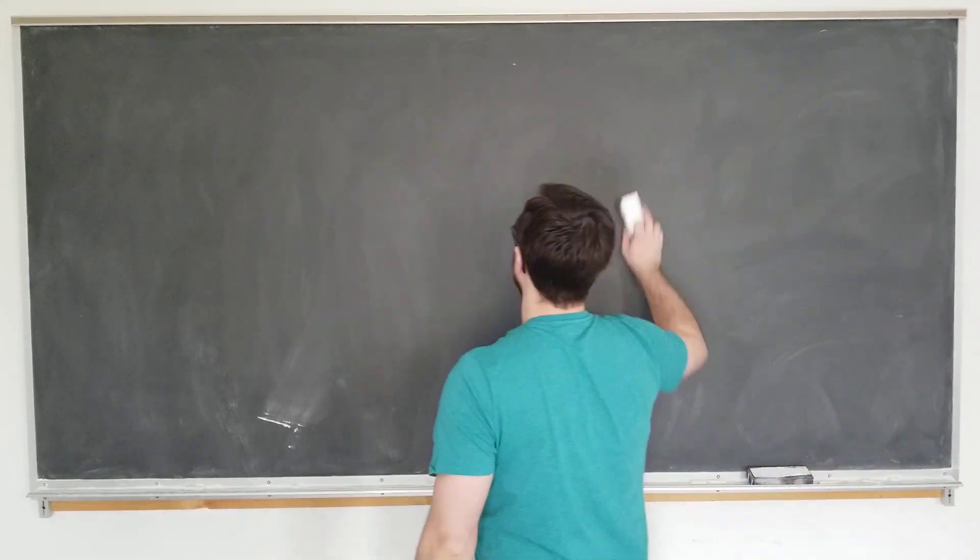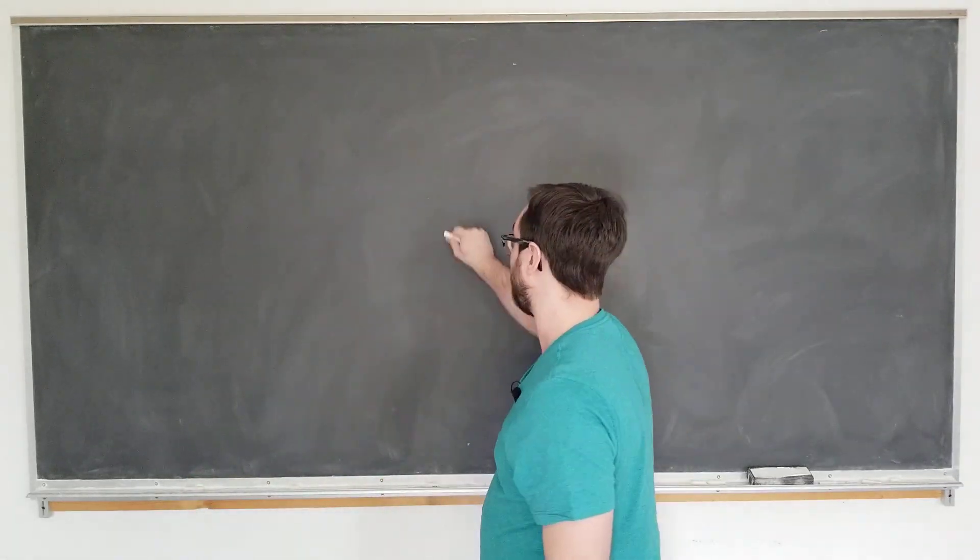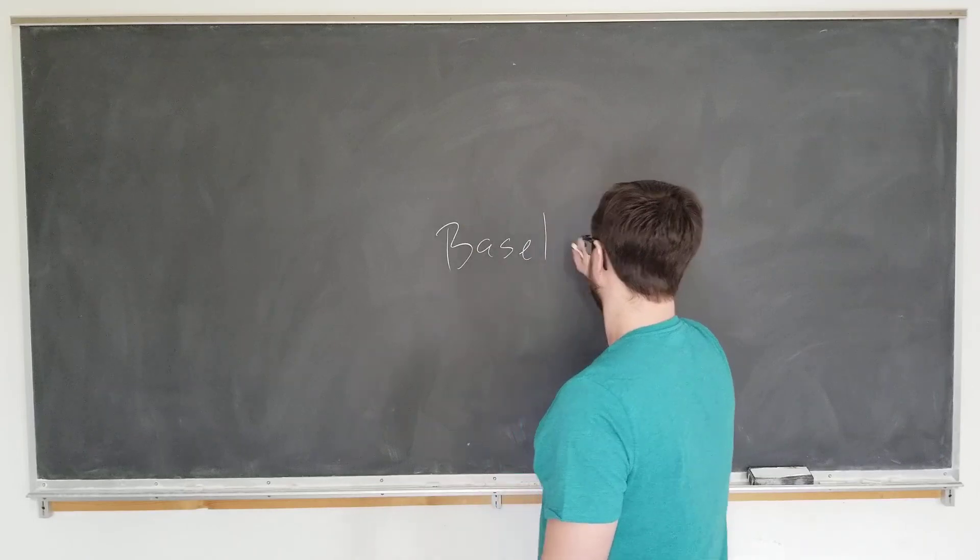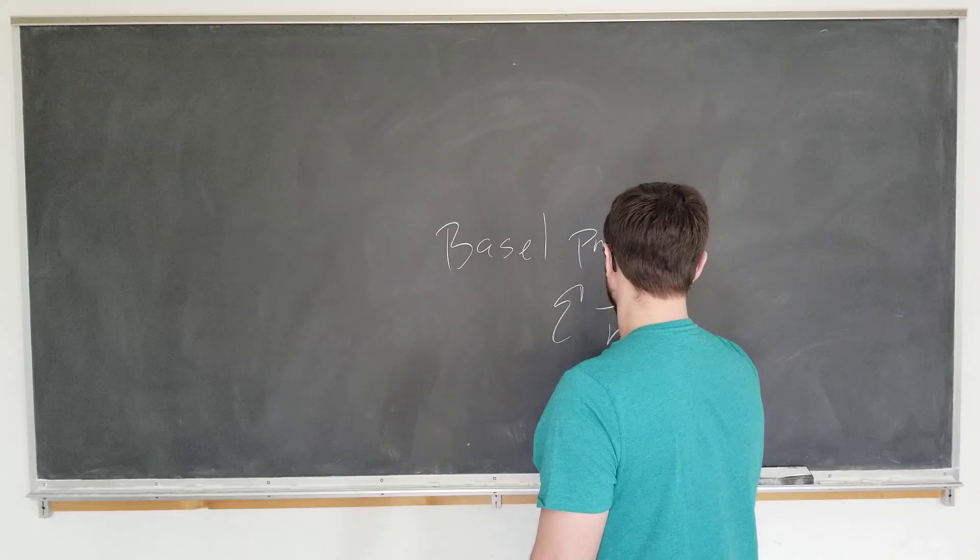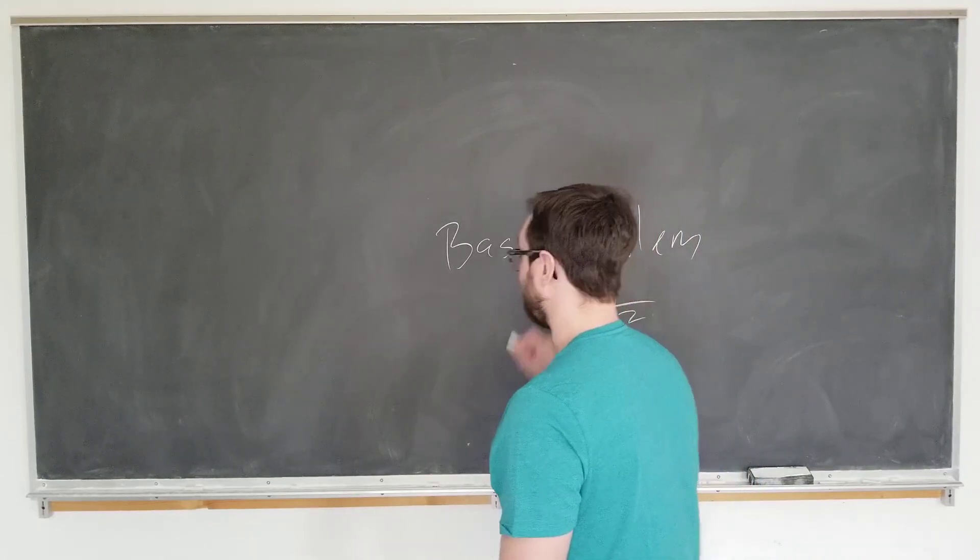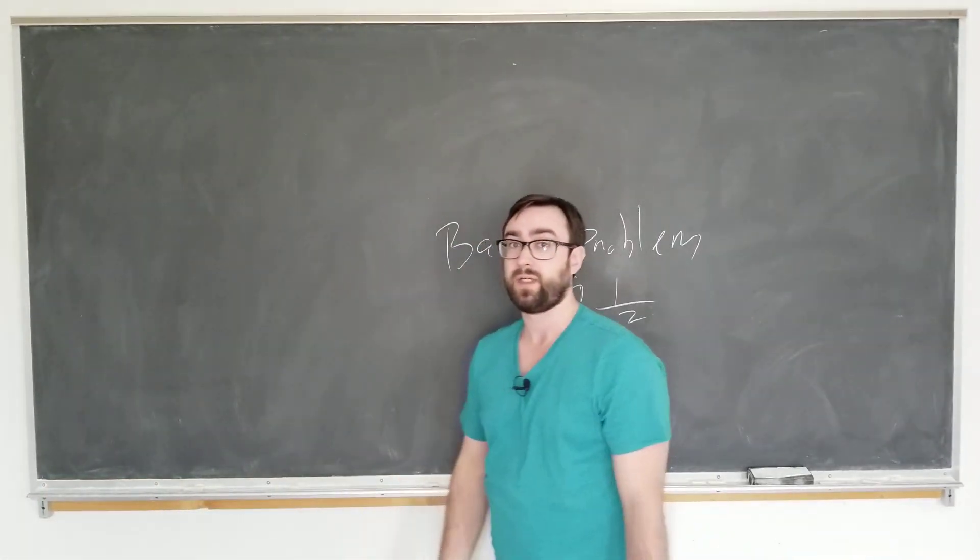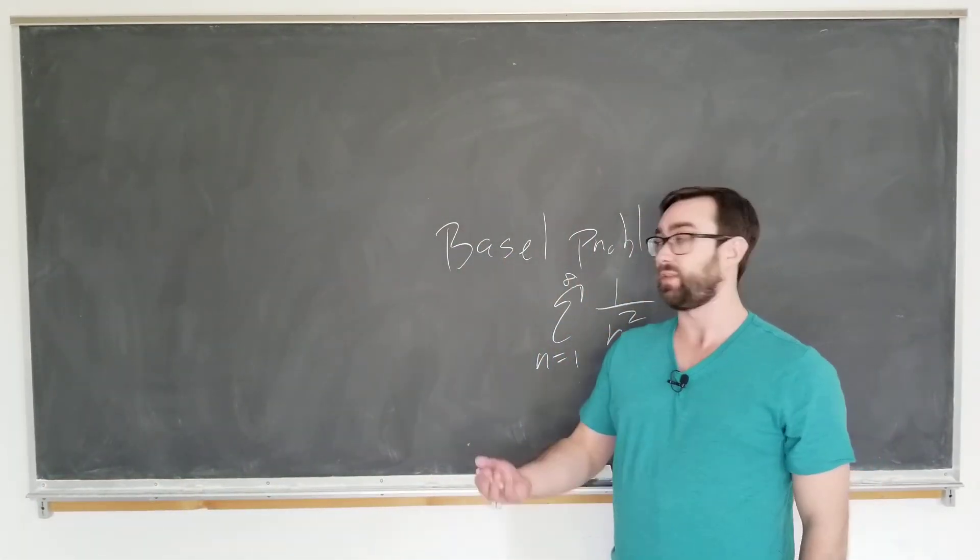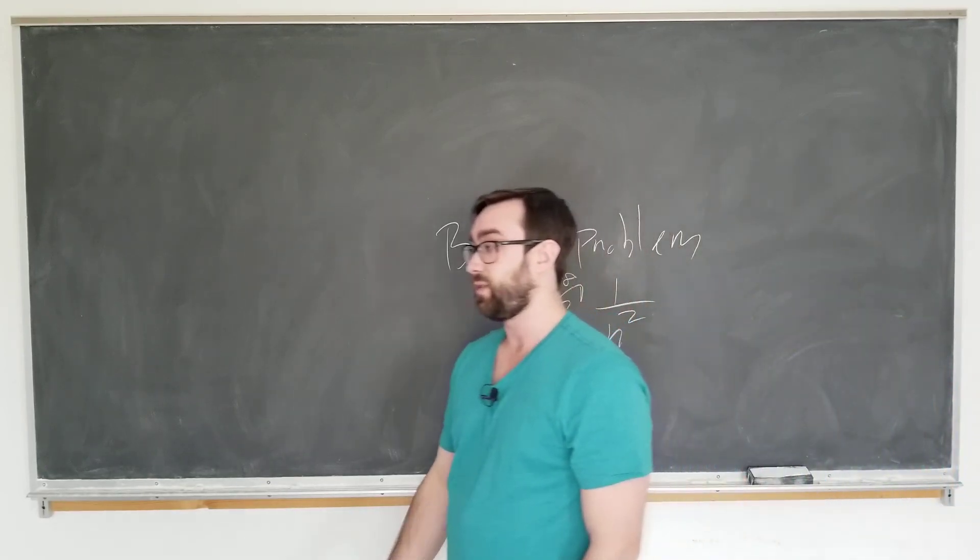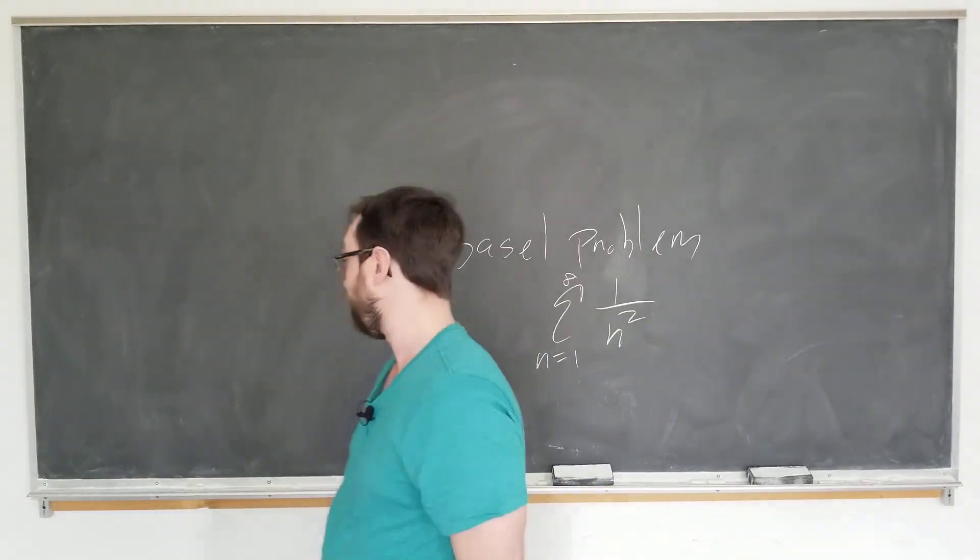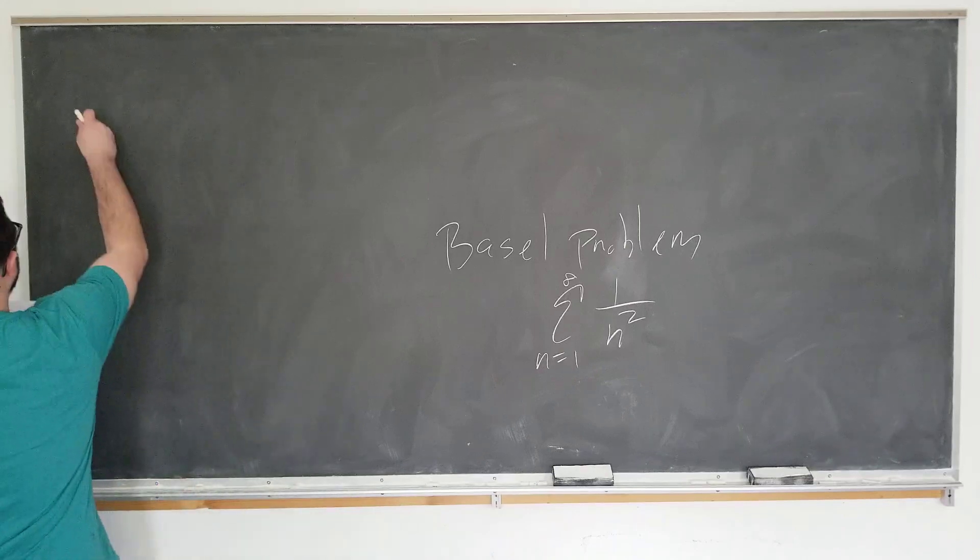I'm not going to derive this in this video. There are plenty of proofs of this if you look at the Basel problem. This problem has you sum 1 over n squared from n equals 1 to infinity. The classical proof of the Basel problem actually employs the infinite product representation of the sine function. And the typical proof by Euler is found there.